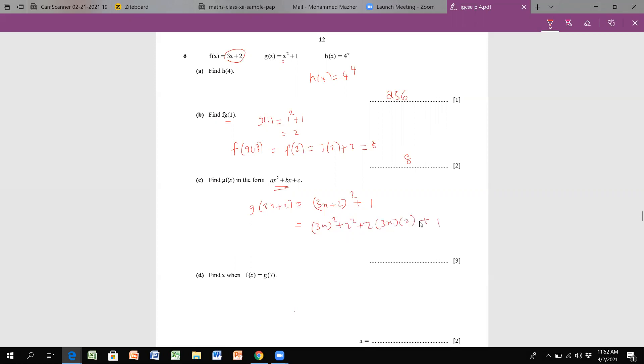So (3x)² will give me 9x² plus 4 plus 12x plus 1. And ultimately in the form they have given us, x² and then x term and the constant, we can add up 4 plus 1, that is 5. So the answer is 9x² + 12x + 5.